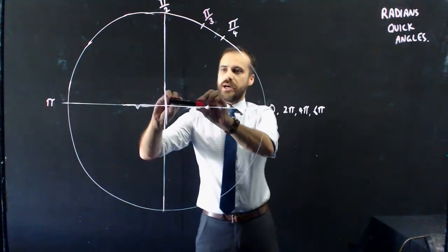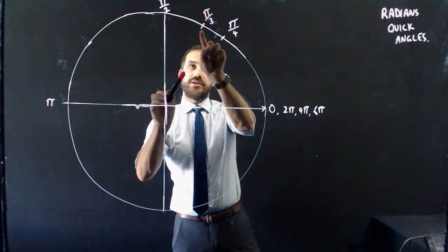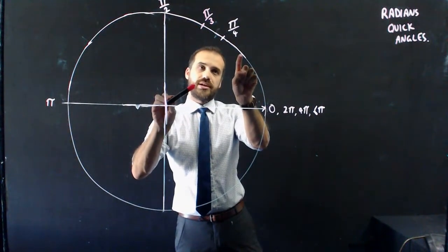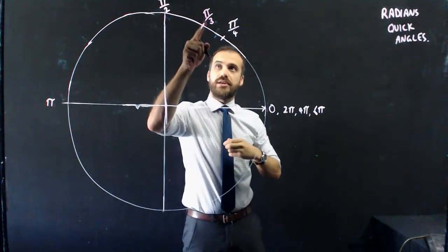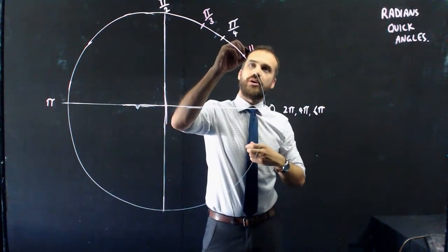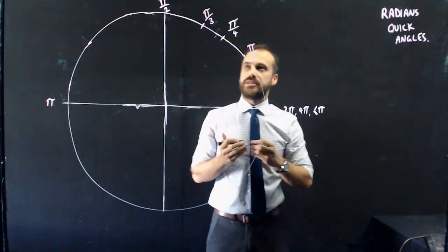Next, we have 60 degrees here. Another useful one is going to be 30 degrees, which is here. π/3 is 60, so half of that is π/6.